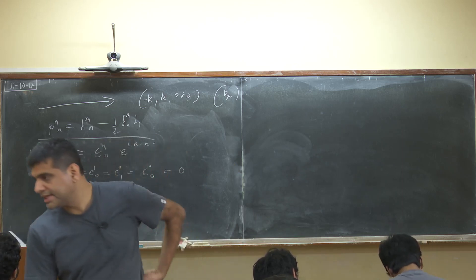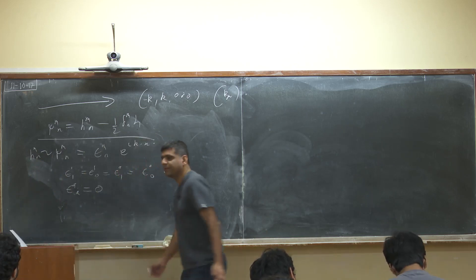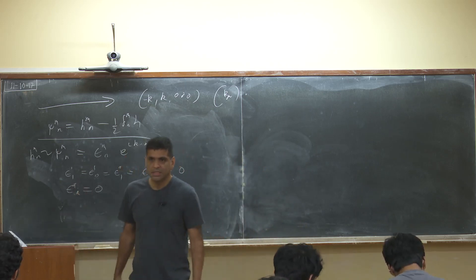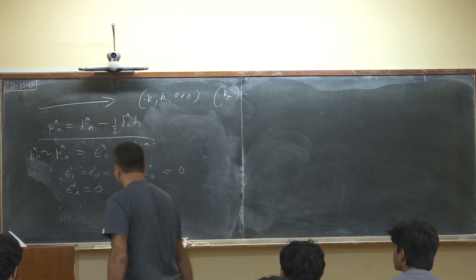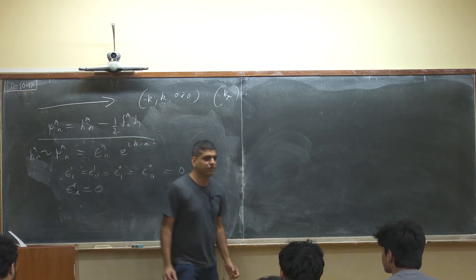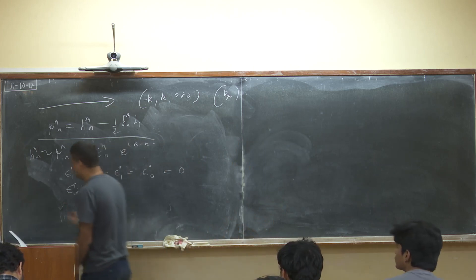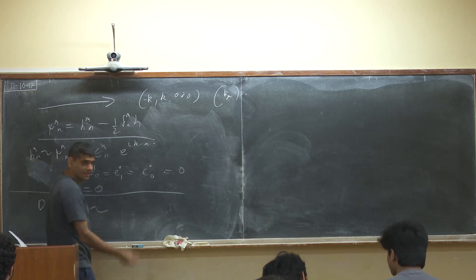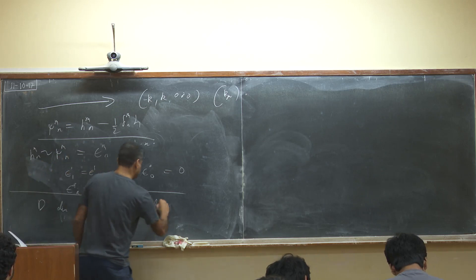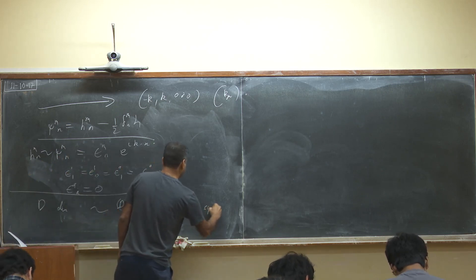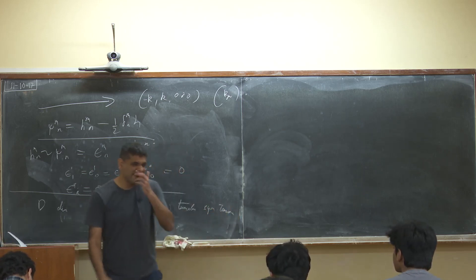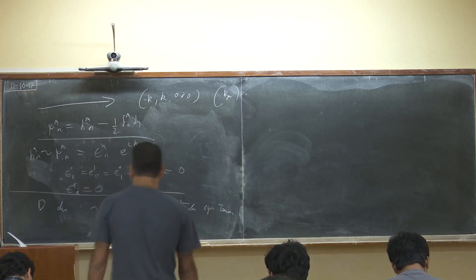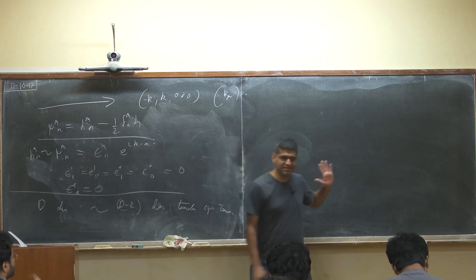Although this is not the main focus of our course, nowhere in this exercise did we use the fact that we were working in four dimensions, except in letting the indices a, b run from 1 to 2. If we repeated this whole exercise in an arbitrary number of dimensions, we would get the same result, except that the indices a, b would run from 1 to d-2. So in a general d-dimensional space, our graviton would be characterized by a (d-2)-dimensional traceless symmetric tensor, in line with the general expectations from the little group analysis discussed last class.